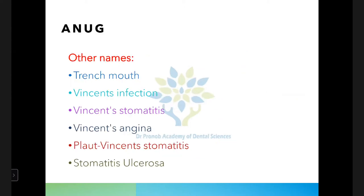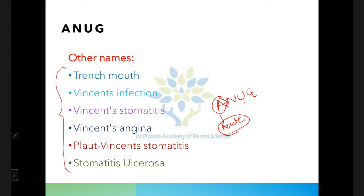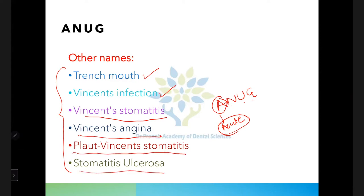You'll commonly come across the term ANUG, which stands for acute necrotizing ulcerative gingivitis. There are several other names for this condition. You need to remember these because exam questions may use them interchangeably. These include: trench mouth, Vincent's infection, Vincent's stomatitis, Vincent's angina, Plaut-Vincent's stomatitis, and stomatitis ulcerosa.